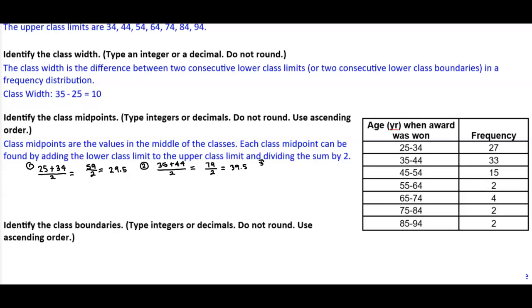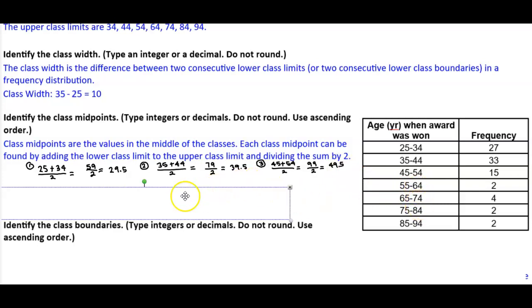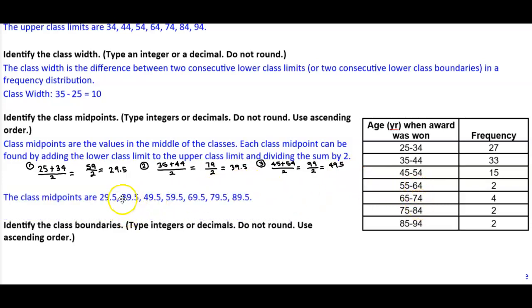For the third class: (45 + 54) / 2 = 99 / 2 = 49.5. Since the class width is 10, we can just add 10 to each midpoint. So the class midpoints are 29.5, 39.5, 49.5, 59.5, 69.5, 79.5, and 89.5.